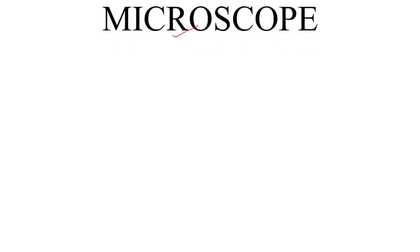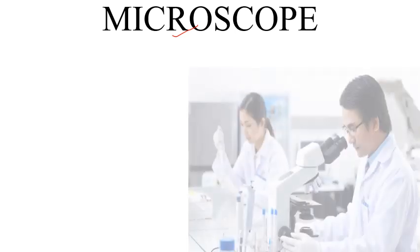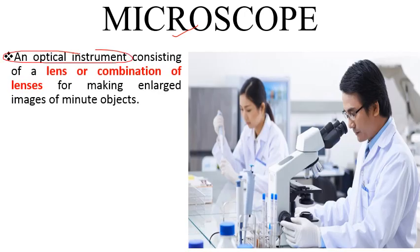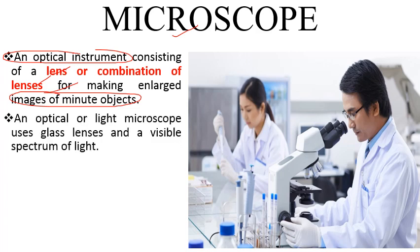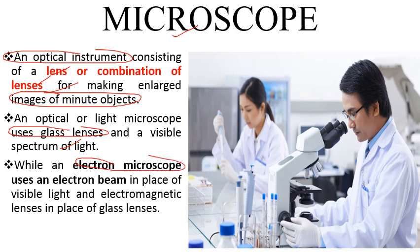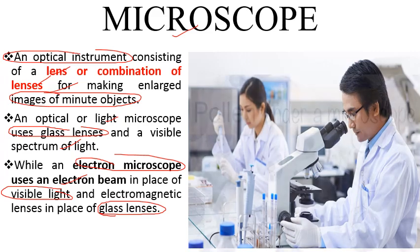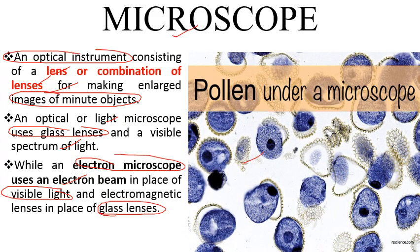A microscope is an instrument consisting of a lens or combination of lenses that magnifies minute objects. An optical or light microscope uses glass lenses and visible spectrum light, while the electron microscope uses an electron beam in place of visible light and electromagnetic lenses in place of glass lenses. This image shows pollen grains under the microscope — very small minute objects that can be enlarged under a simple or compound microscope.